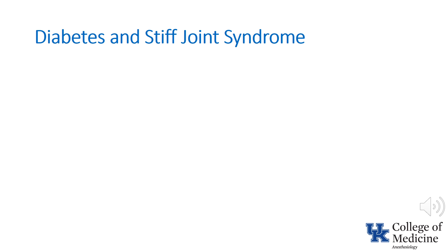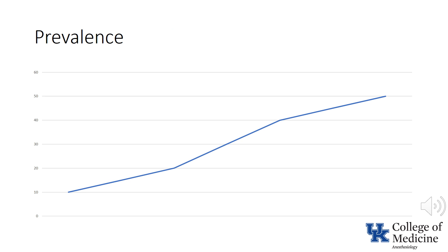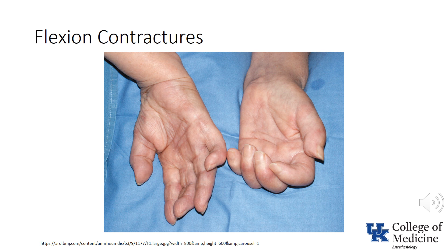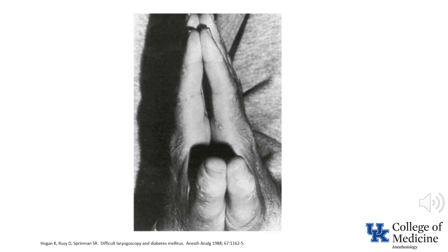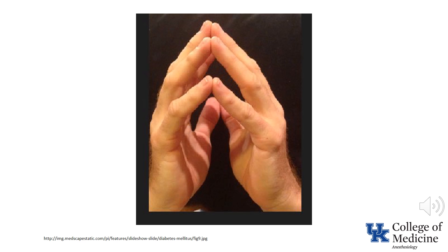Stiff joint syndrome is also termed diabetic scleroderma, chiroarthropathy, or diabetic stiff hands syndrome. It is described as being present in up to 40 to 50% of patients with type 1 diabetes, but may also be seen in patients with type 2 diabetes; the prevalence increases with disease duration. Flexion contractures of the fingers may be present. Screening is done by looking for the prayer sign — normally subjects are able to press their palms together, but patients with stiff joint syndrome are unable to do so, leaving a gap between the opposed fingers and palms. The abnormality is due to sclerosis of tendon sheaths and limited joint range of motion in addition to flexion contractures of fingers.